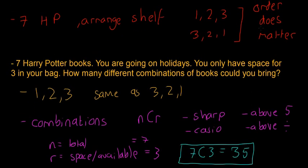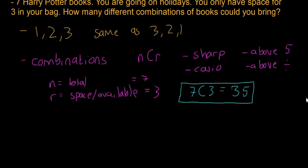If you're arranging your Harry Potter books on a shelf, your order does matter because one, two, three is going to be different from three, two, one. But if you're bringing the Harry Potter books on holidays and you have to choose them, you're not arranging them. In that case, one, two, three is the same as three, two, one. That'll just give you a hint as to which button to use: nPr or nCr.